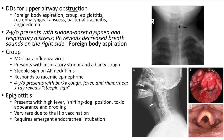Upper airway obstruction differential diagnoses include foreign body aspiration, croup, epiglottitis, retropharyngeal abscess, bacterial tracheitis, and angioedema. Case of foreign body aspiration: 2-year-old presents with sudden onset dyspnea and respiratory distress; physical examination reveals decreased breath sounds on the right side.